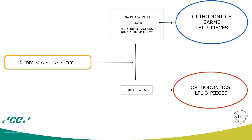Cases with a discrepancy between 5 and 7 mm also warrant discussion. For these patients, I would also suggest orthodontics and then only a LeFort I with three pieces — but with some exceptions. The first exception is patients with a low palatal vault. These patients have the problem that it will be difficult to expand during surgery, because it will be difficult for the surgeon to stretch the soft tissue of the palate. For this reason, patients with a low palatal vault may be better treated with a SARPE first, and afterwards a LeFort I — single or in three pieces depending on the situation found after preparation.